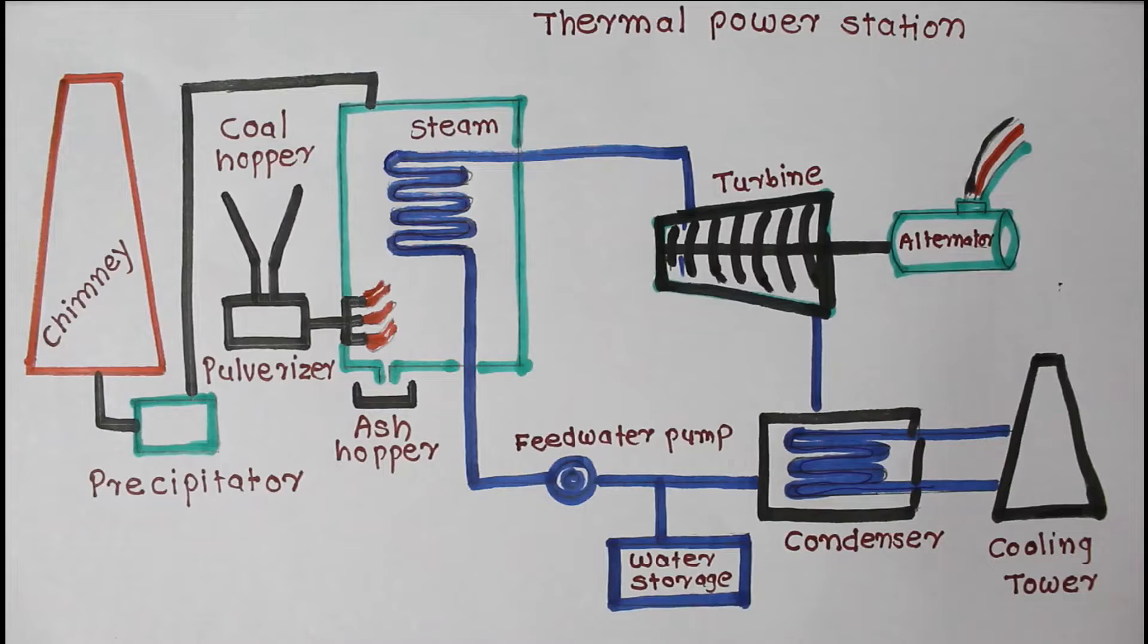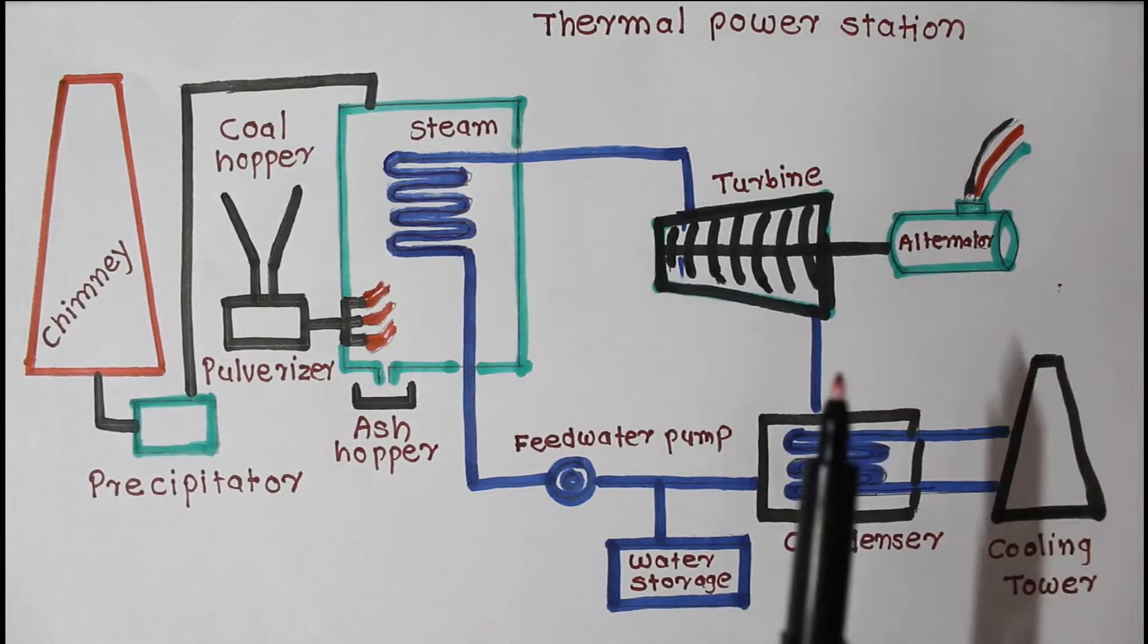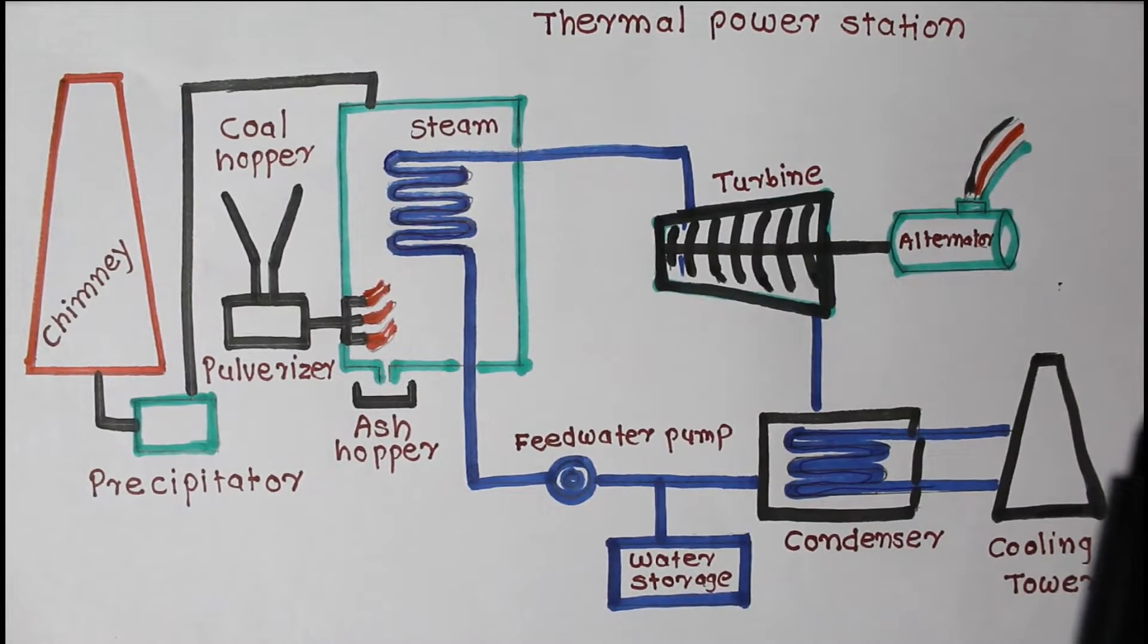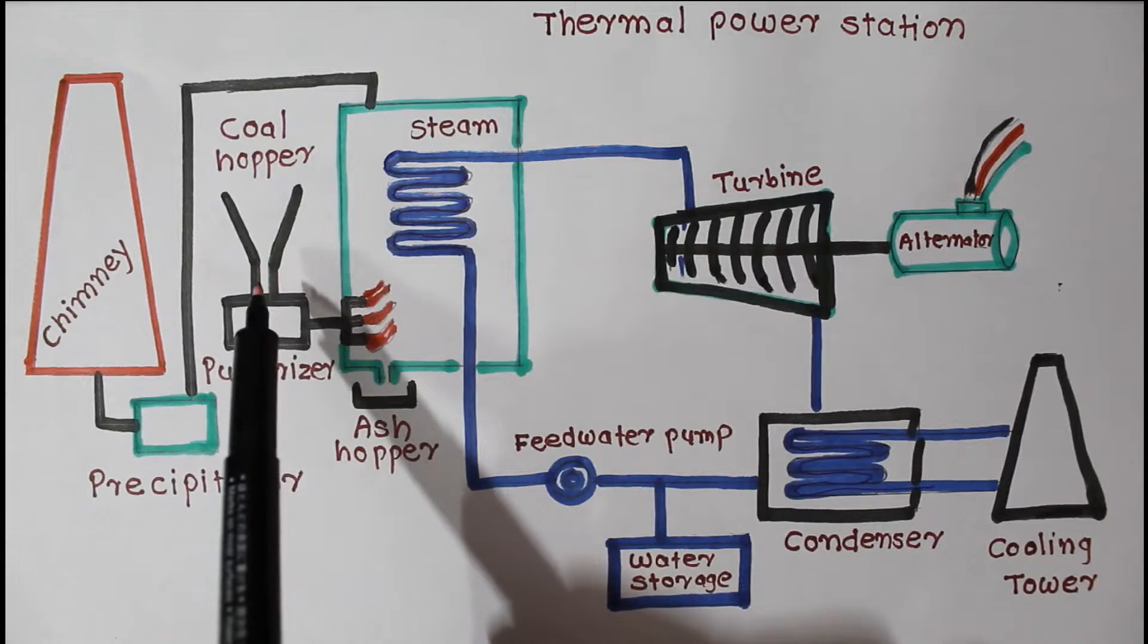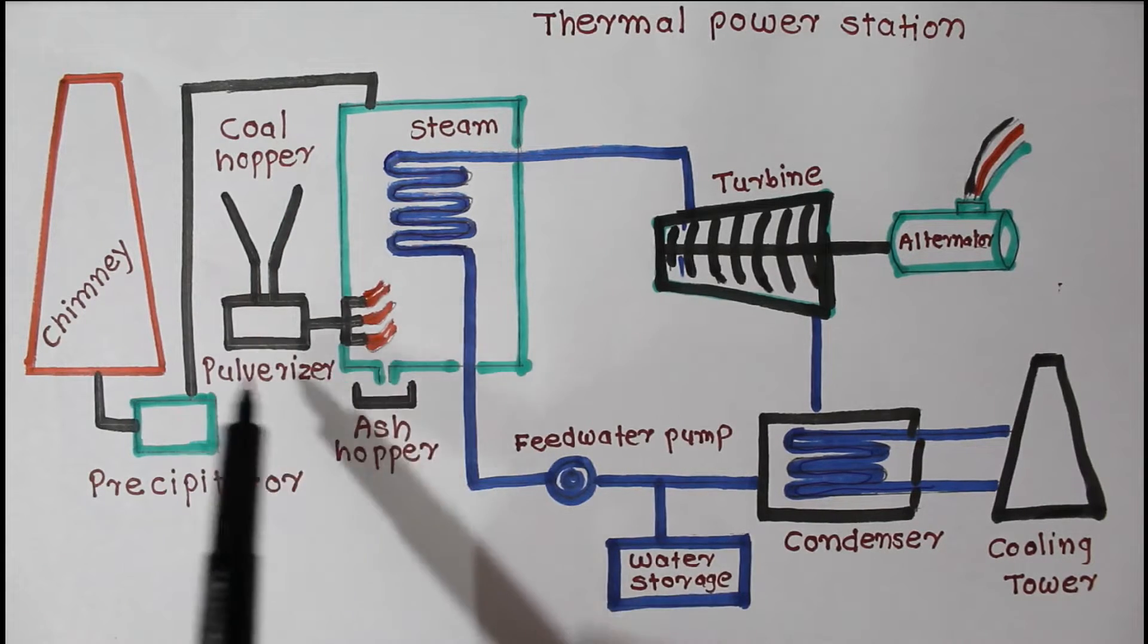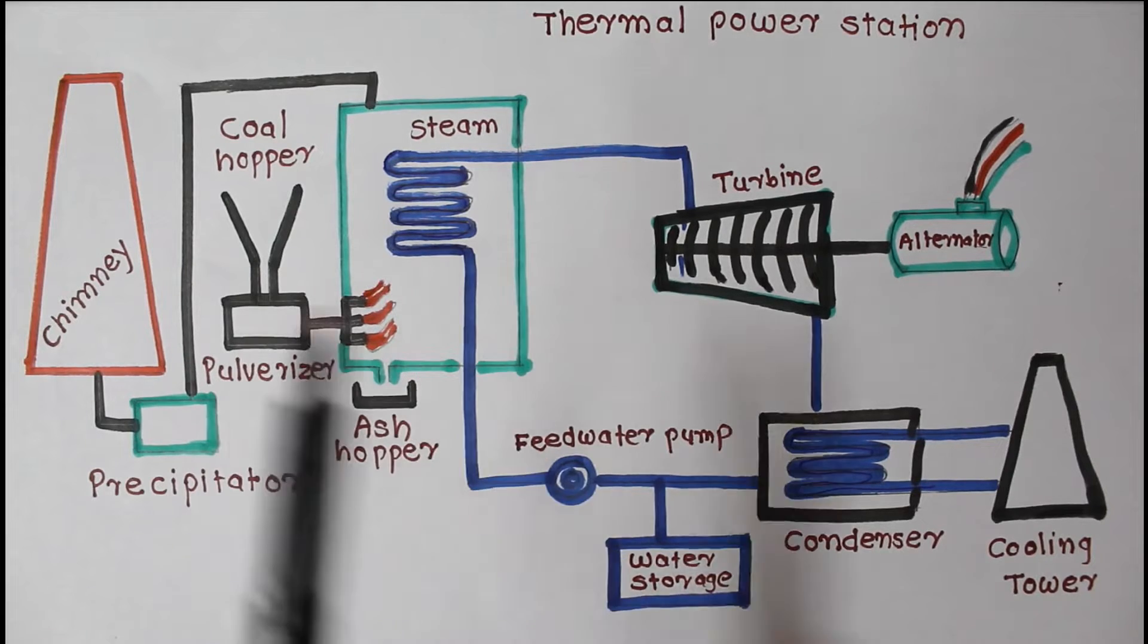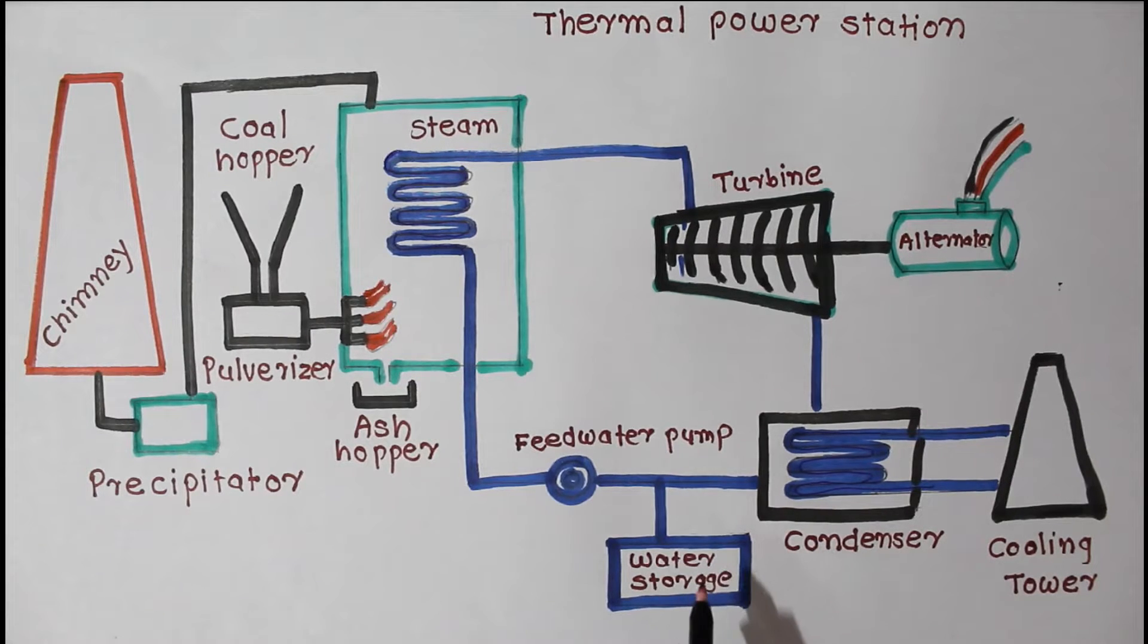Now working of this thermal power station. First coal is fed into coal hopper. Then pulverizer pulverizes the coal. Water is stored into water storage. Two storage required: one is coal and second one is water.